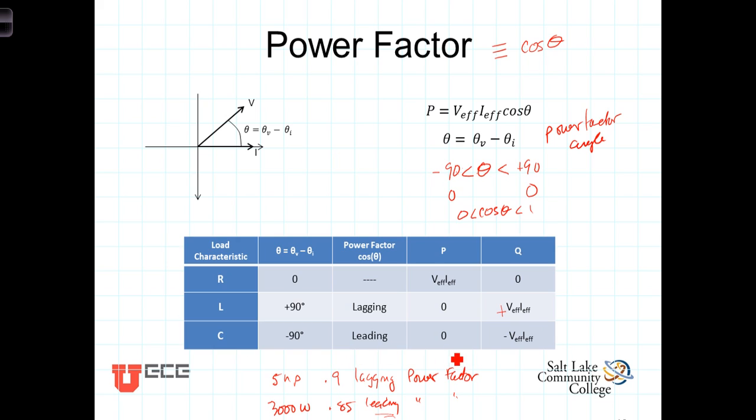And finally, in a capacitor, again, average power is 0. Q, the reactive power, is equal to V effective I effective, with a minus sign in front of it. Q is negative in a capacitor.